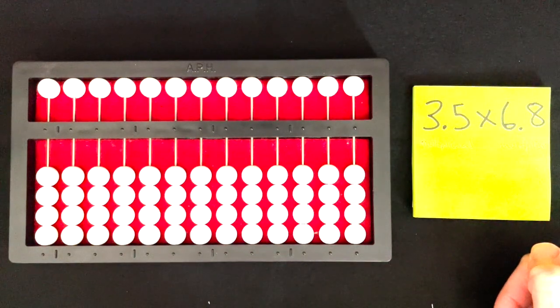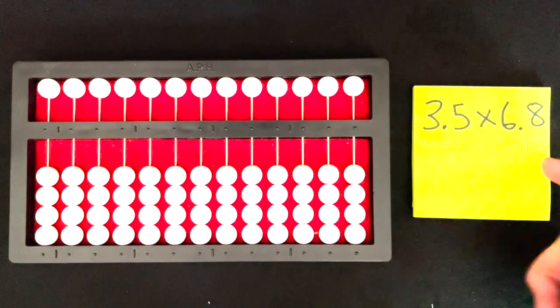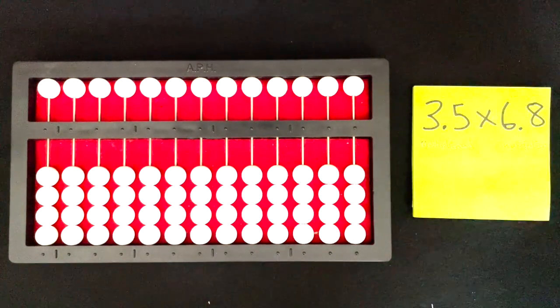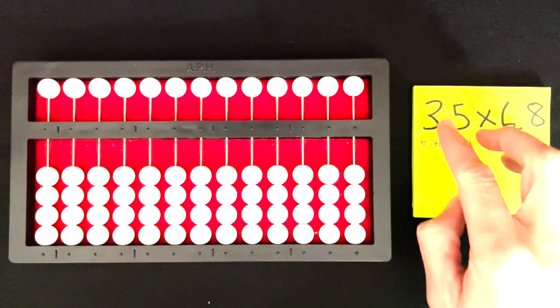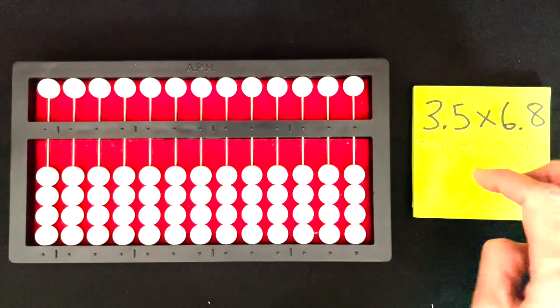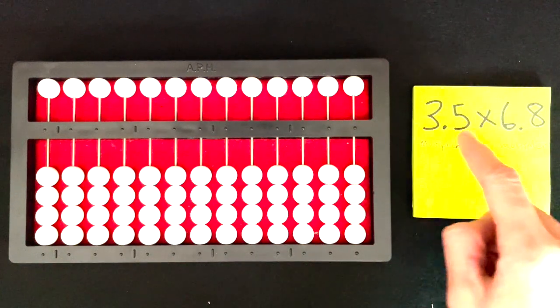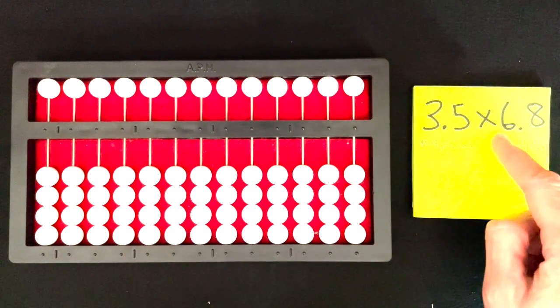It's not too different at all from our regular multiplication using the counting method, except at the very end when we take into consideration our decimal points. Let's pretend like our decimal points aren't there and we'll call this a 3 and a 5. So our multiplicand is 35 and our multiplier is 68.